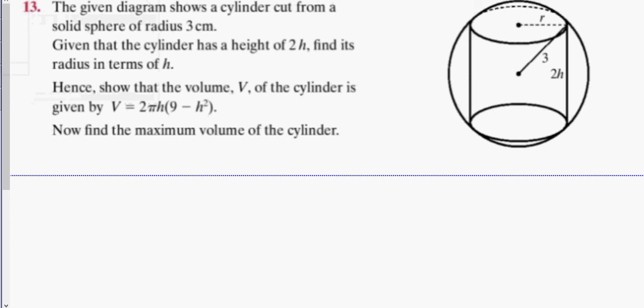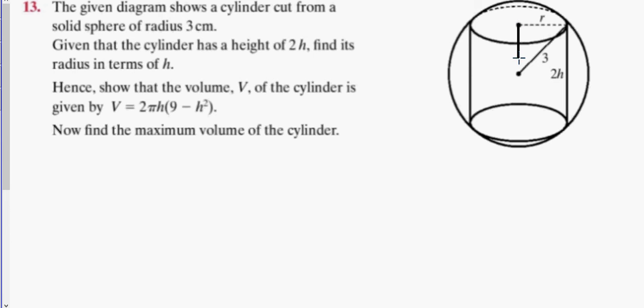We have a cylinder that's cut from a solid sphere. Given that the cylinder has a height of 2h, what is the radius? The radius of the sphere is 3. Would everybody agree that the center of the cylinder is also the center of the sphere?